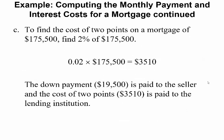To find the cost of two points on the mortgage: remember, a point is one percentage. So how much extra do you have to pay to close the loan? Take the amount you're borrowing, multiply it by 2%, so 0.02 times the amount of your mortgage. You have to pay the bank $3,510. The down payment is paid to the seller and the cost of the two points is paid to the bank — basically the extra cost of them issuing you the mortgage.